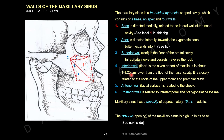The anterior wall is related to the cheek. The posterior wall, number six, is a small triangle facing backwards towards the infratemporal fossa and pterygopalatine fossa. The maxillary sinus has a capacity of approximately 15 ml in adults. The ostium — the opening of the maxillary sinus — is high up in its base.